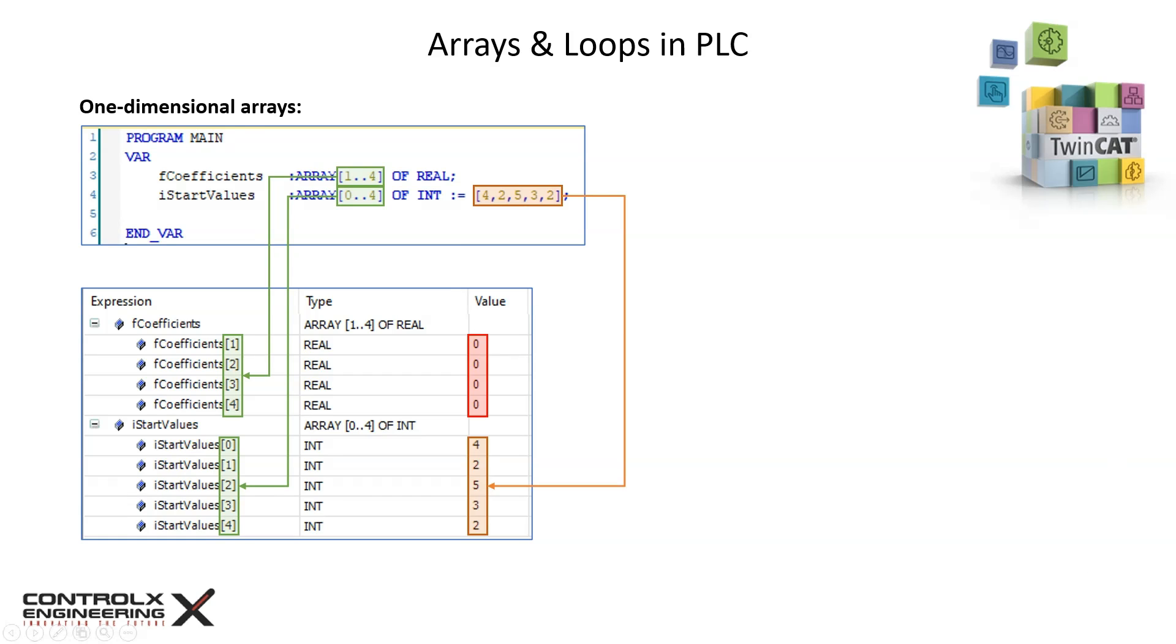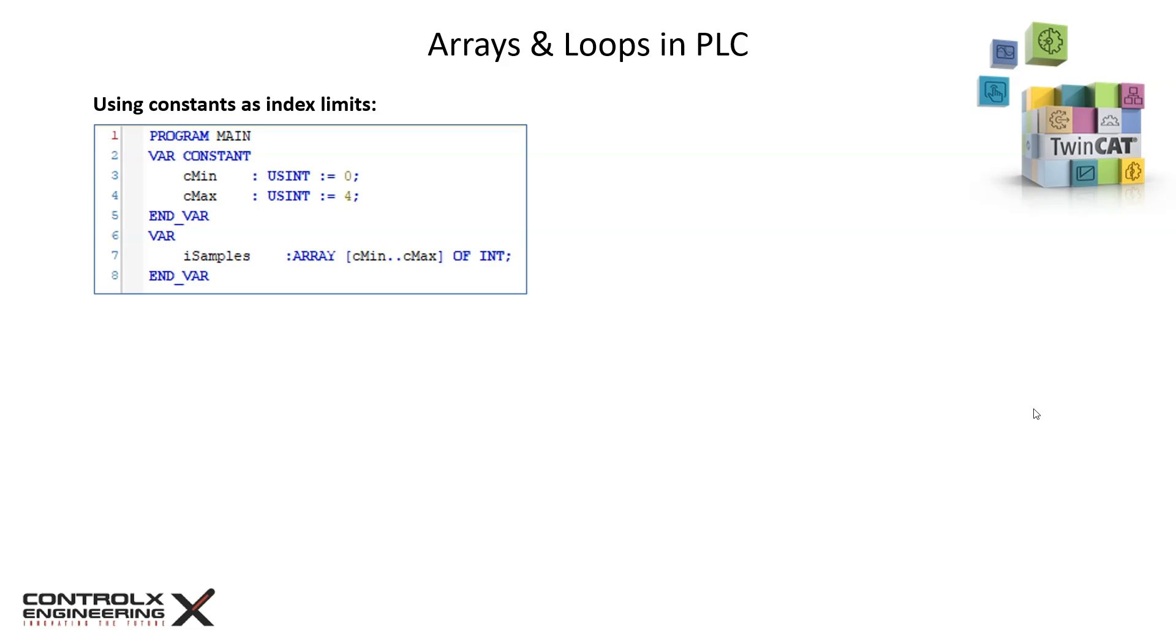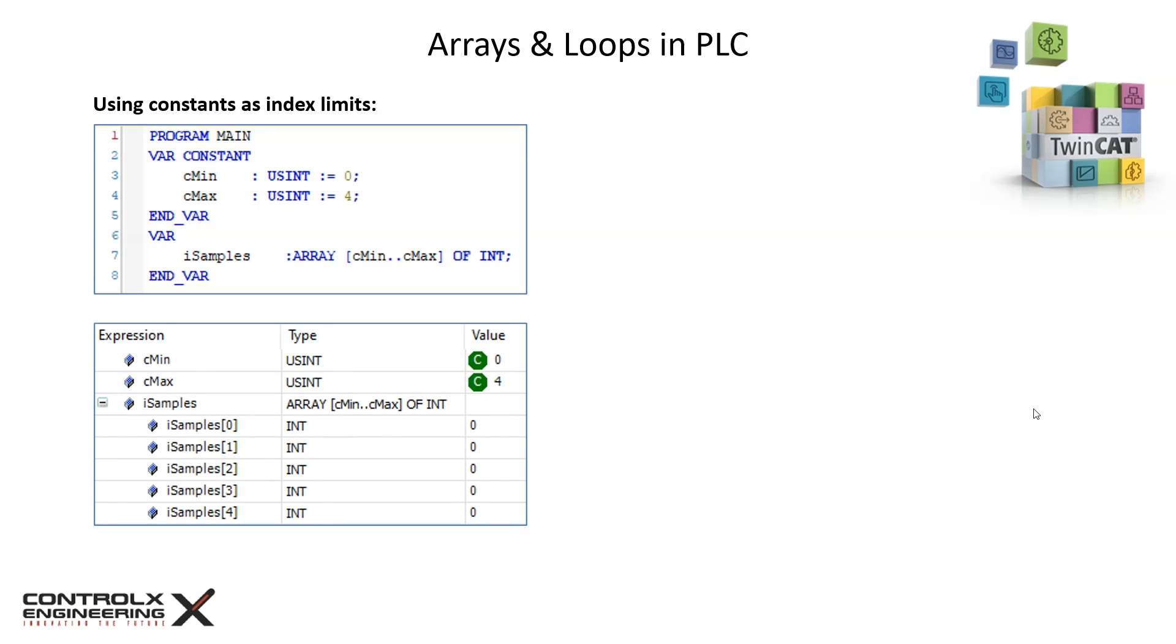We can also use constants for the lower and upper index limits of an array as shown in this example. This is the runtime view of our array with integer elements from index 0 to index 4 as defined by the constants C min and C max.